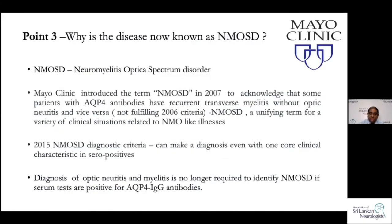Point three: why is this disease now known as NMOSD? It was known earlier as NMO. The term NMOSD — neuromyelitis optica spectrum disorder — was introduced in 2007 by the Mayo Clinic, where the antibody was discovered, to acknowledge that some patients with aquaporin-4 antibodies have recurrent transverse myelitis without optic neuritis, and vice versa.